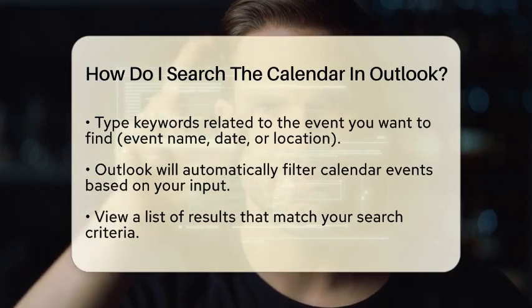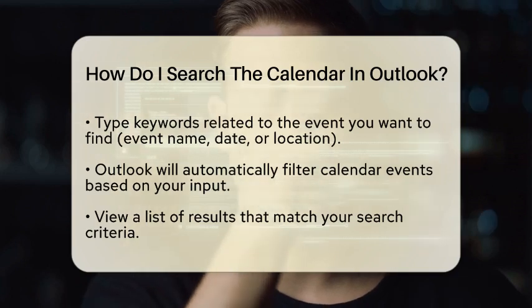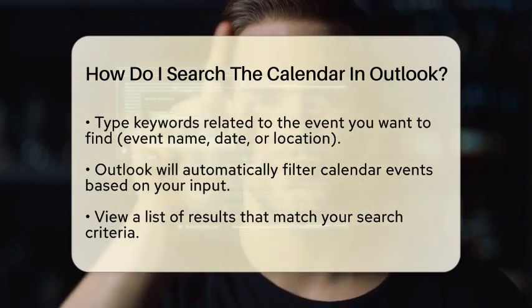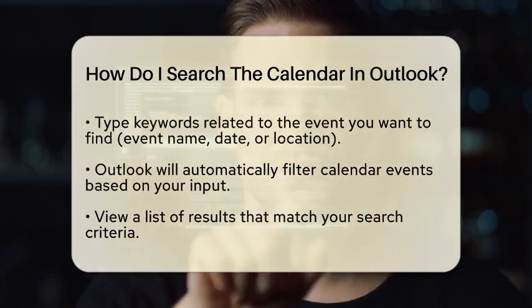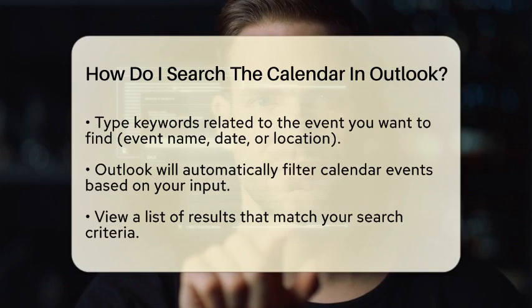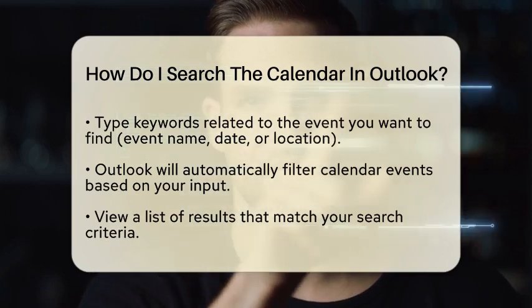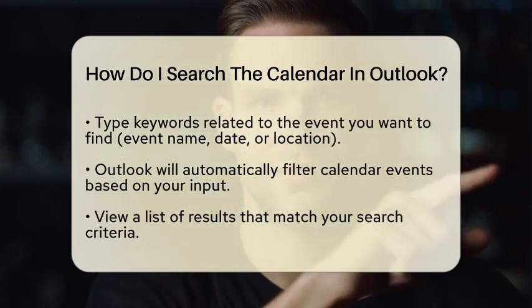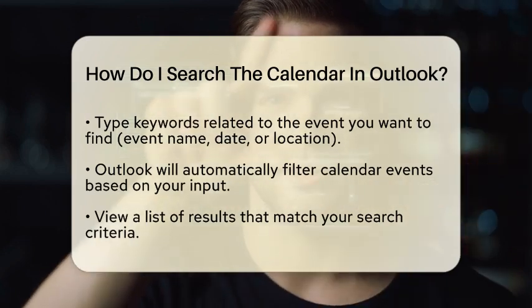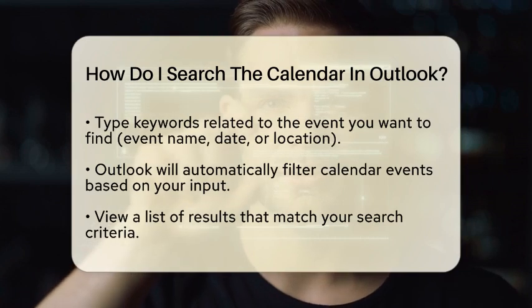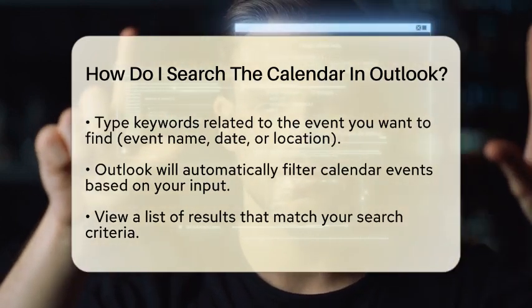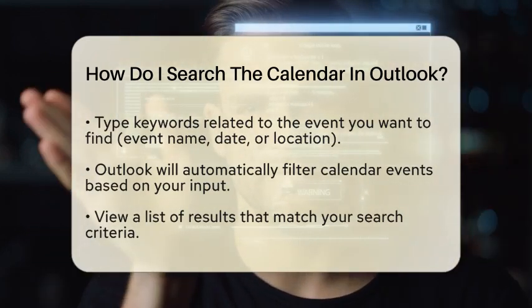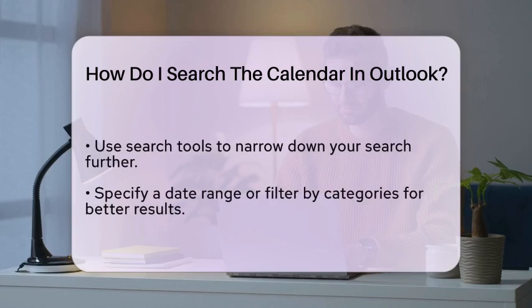In the search bar, type in keywords related to the event you are looking for. This could be the name of the event, the date, or even the location. As you type, Outlook will automatically filter the calendar events based on your input. You will see a list of results that match your search criteria.